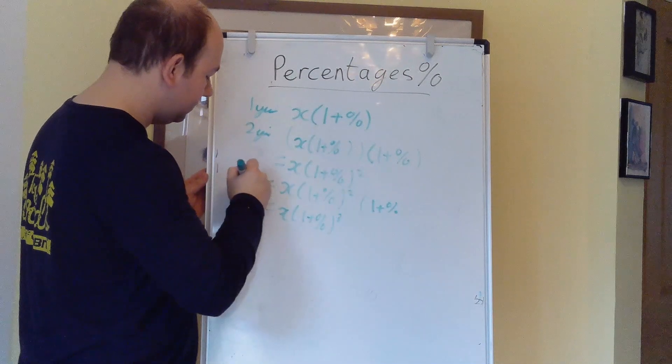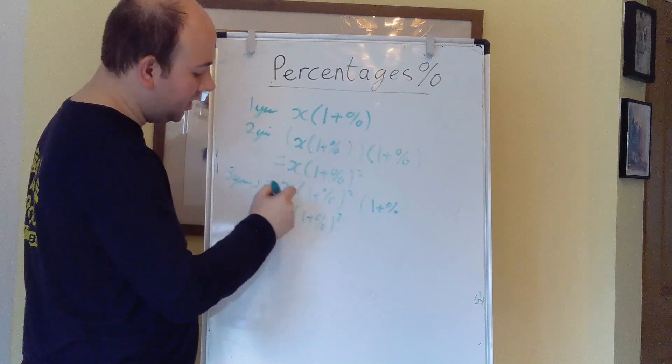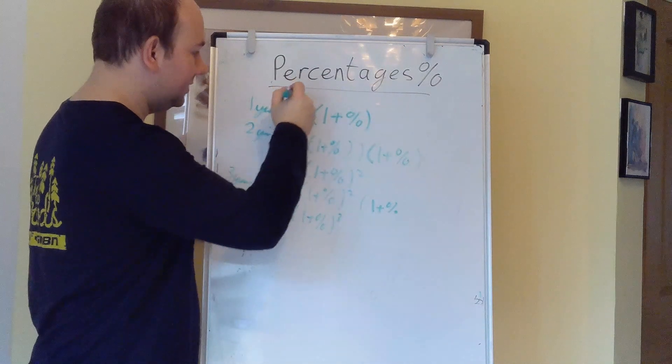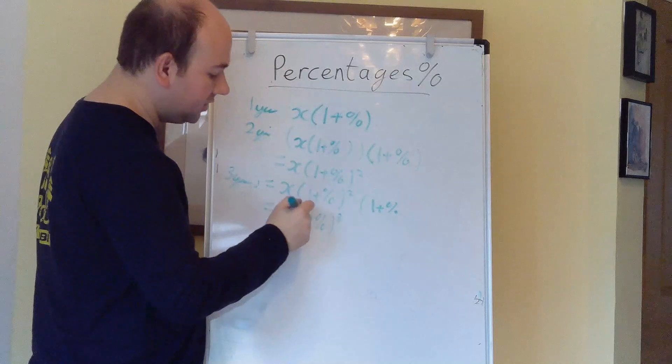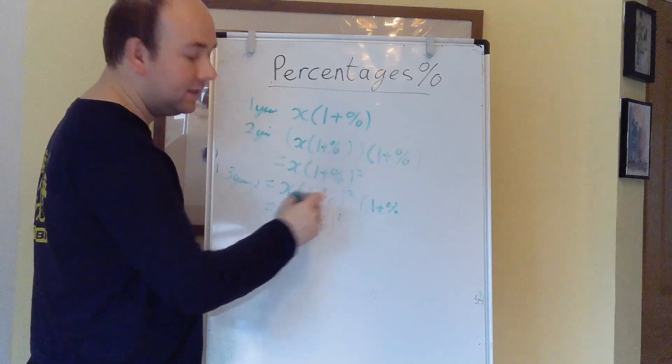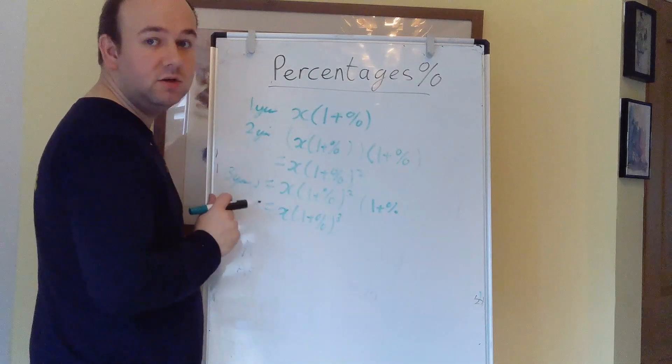Which is your principal amount, which is your starting amount, which is x. You multiply it by 1 plus your percentage, and you raise that bracket to the number of years you have been through.